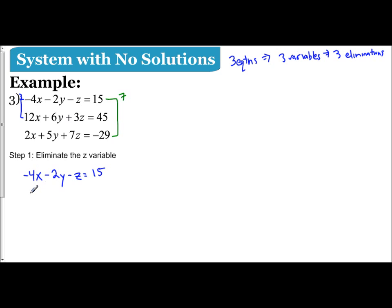We have -4x - 2y - z = 15. The second equation, you have 12x + 6y + 3z = 45. Now remember, organizing your work is really important and taking your time. So I'm going to multiply the top equation by 3, and that's going to make this a -3z.